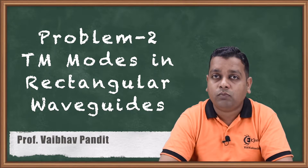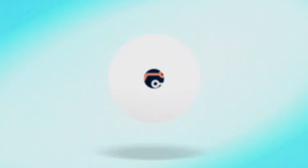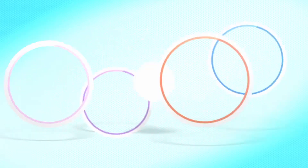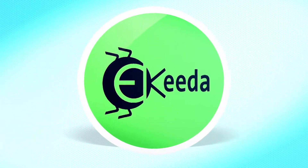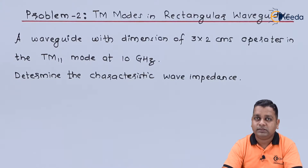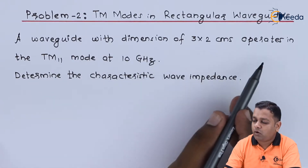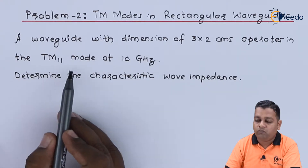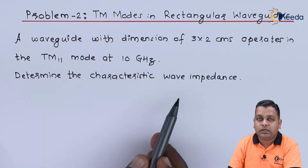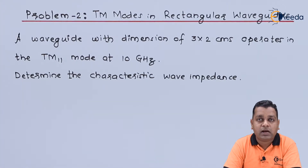In the previous video we solved problem number one corresponding to TM mode of wave propagation. Now let us take another problem. A waveguide with dimensions of 3 by 2 centimeters operates in TM11 mode at 10 gigahertz. Determine the characteristic wave impedance.